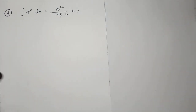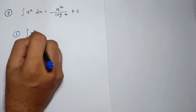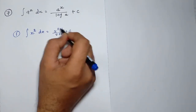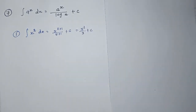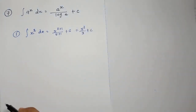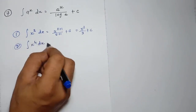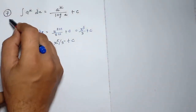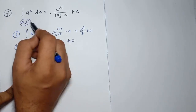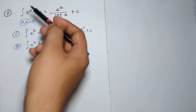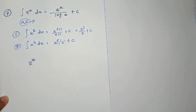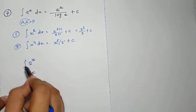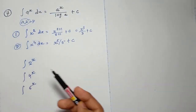Let's understand this. We know the first rule: if x squared is given, the answer is x cubed divided by 3 plus c; if x to the 4th, then x to the 5th divided by 5 plus c. Now, rule number 7 is actually opposite to rule number 1. In rule 1, x is the base; in rule 7, x is the exponent. So a raised to x, where a is a number like 2, 4, or 6.